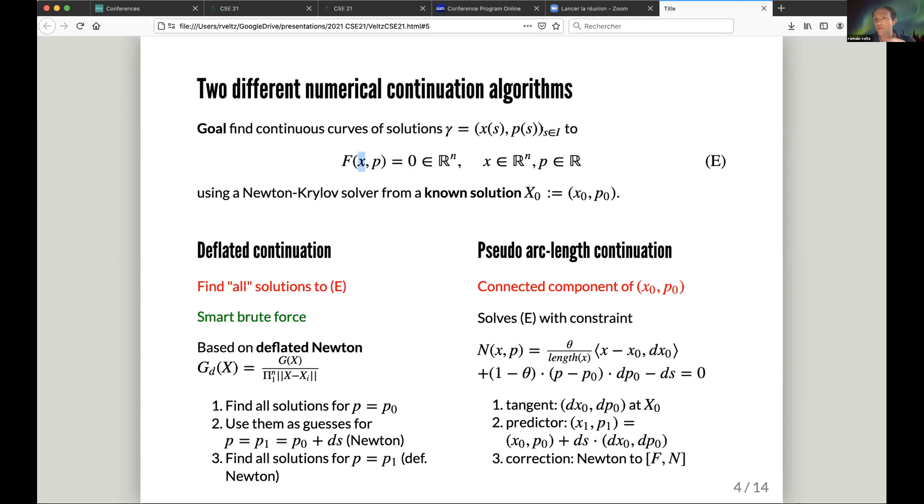What we want to do is compute curves of solutions x(s), p(s) where s can be the arc length, for example, and we want this curve to pass through a known solution x0 at (x0, p0). The first algorithm is called deflated continuation. It will give you basically all solutions to E. It's a smart brute force based on this nice technique introduced by Patrick Farrell, which is deflated continuation. In a nutshell, if you know the roots x1, x2, xn of g, you can form this new functional g divided by the product of the norm, and you apply Newton to this new functional with some numerical tricks to make it stable.